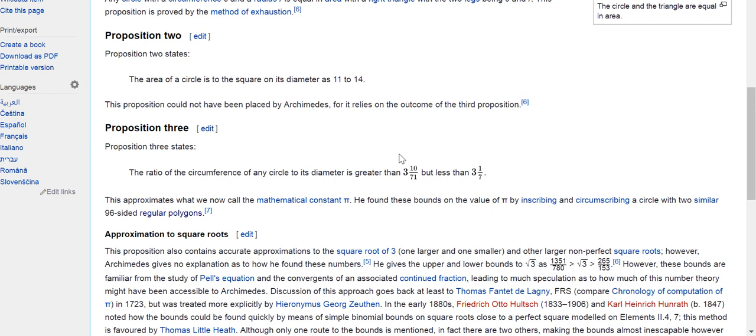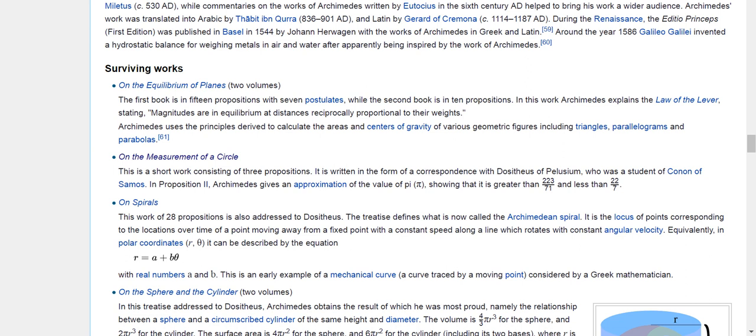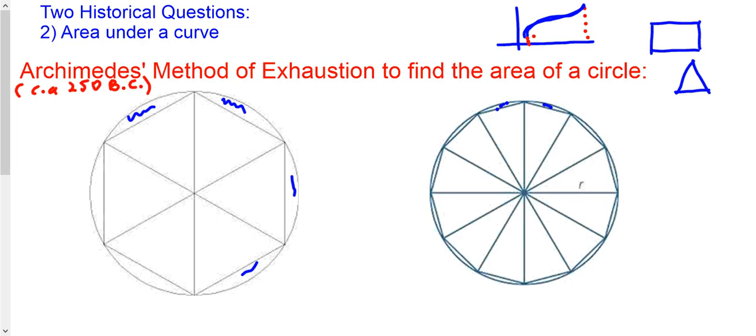As a matter of fact, in this paper, he established the value of pi between this number and that number. So that's an extremely good approximation to what we know for the value of pi today. Now that was 250 BC.